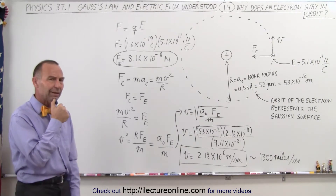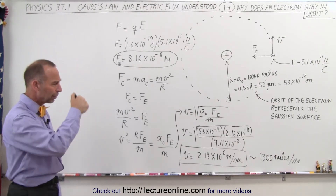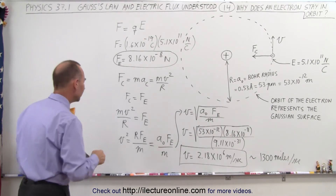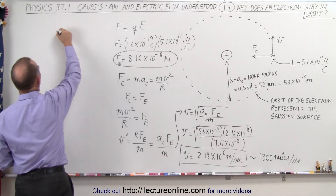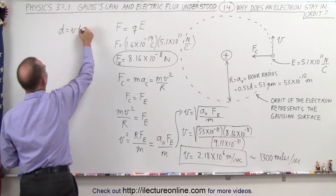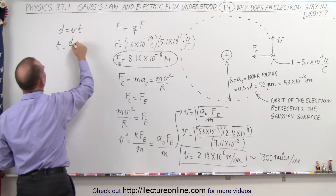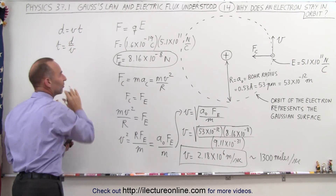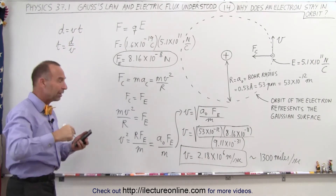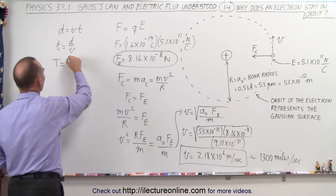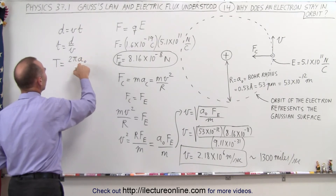Now we wonder: how many times does the electron go around the nucleus moving that fast? We can use the fact that distance equals velocity times time, so time equals distance divided by velocity. The time it takes to make one orbit is called the period. The period equals the circumference — 2 pi times the Bohr radius — divided by the velocity.